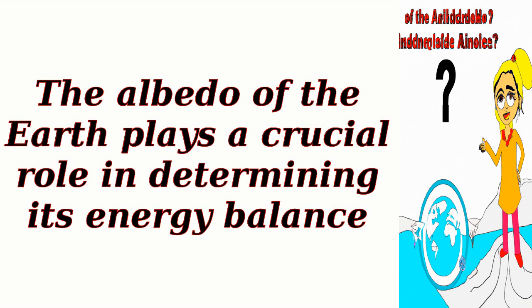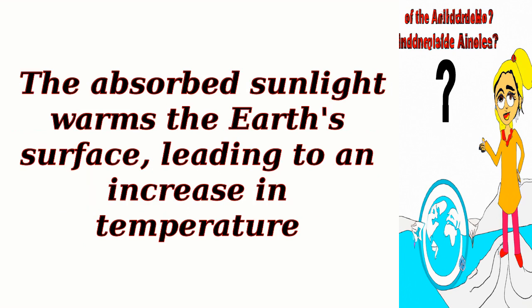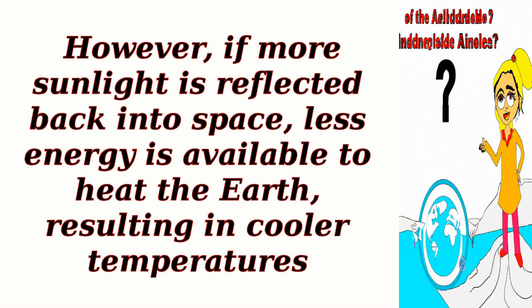The albedo of the Earth plays a crucial role in determining its energy balance. When sunlight reaches the Earth, it can either be absorbed by the surface or reflected back into space. The absorbed sunlight warms the Earth's surface, leading to an increase in temperature. However, if more sunlight is reflected back into space, less energy is available to heat the Earth, resulting in cooler temperatures.